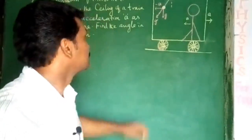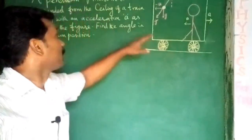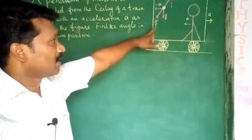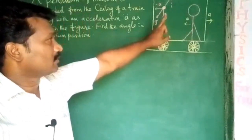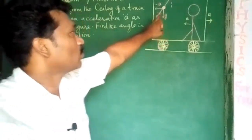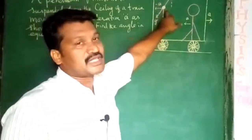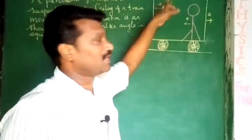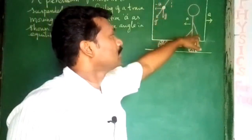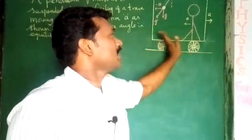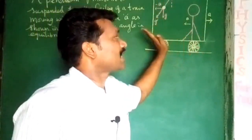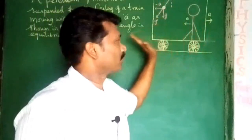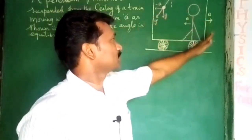Hi Friends! One bob is suspended on the roof of the train. The train is moving with acceleration from left to right.